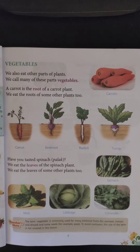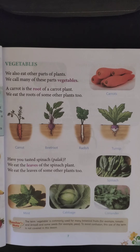Like cauliflower — it is a flower of the plant, which can be used as a vegetable. Tomato is actually a fruit, but we use it as a vegetable. Mainly based on their use, they are considered as vegetables.